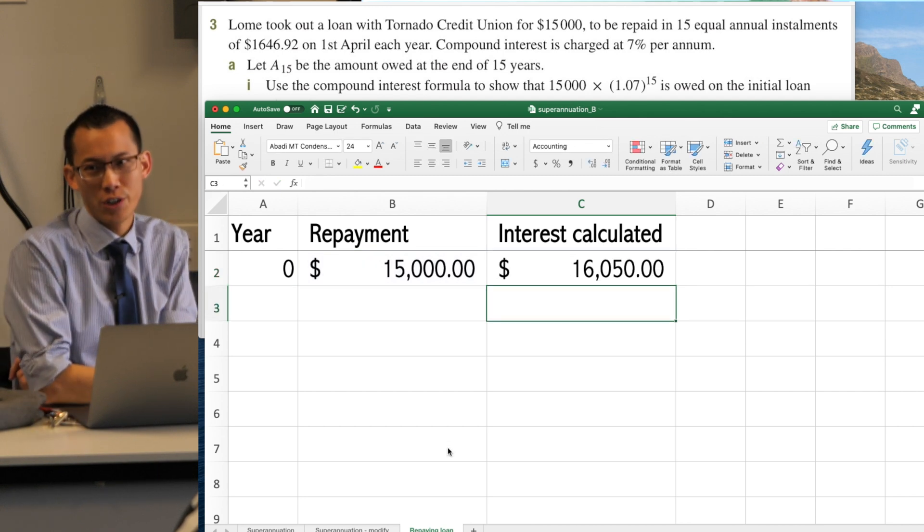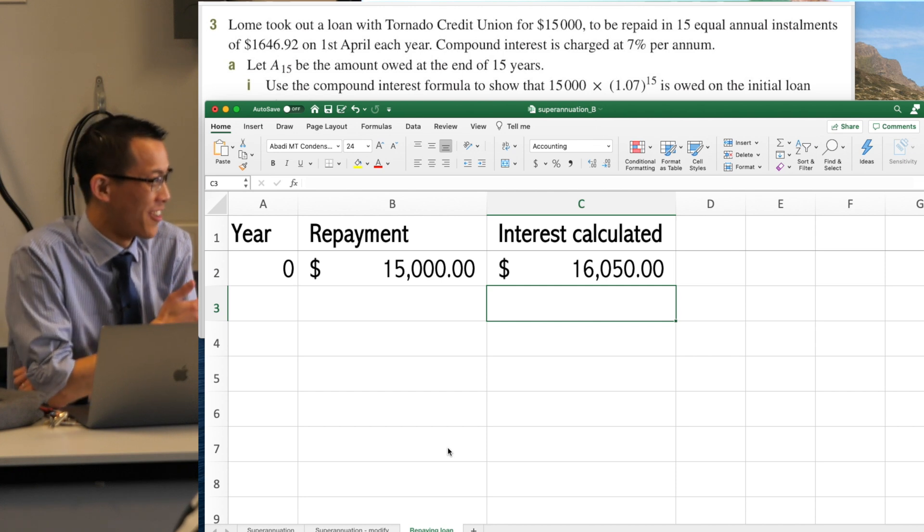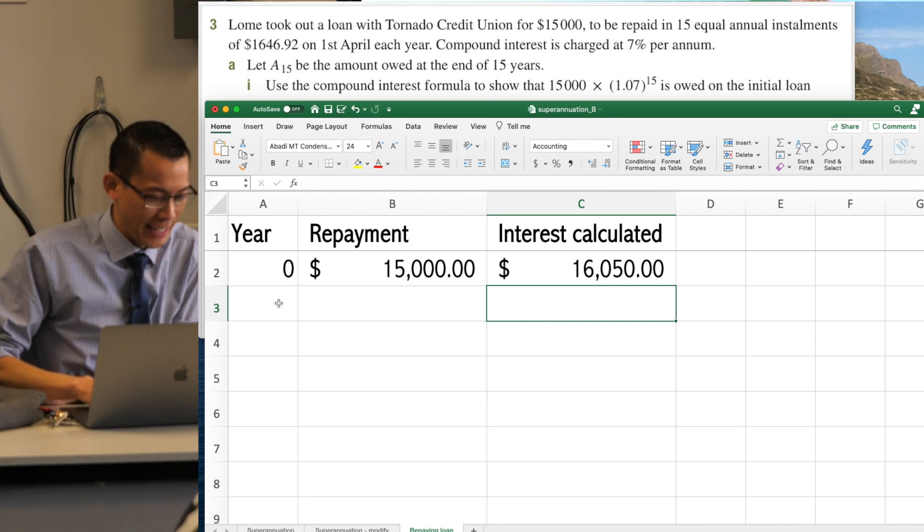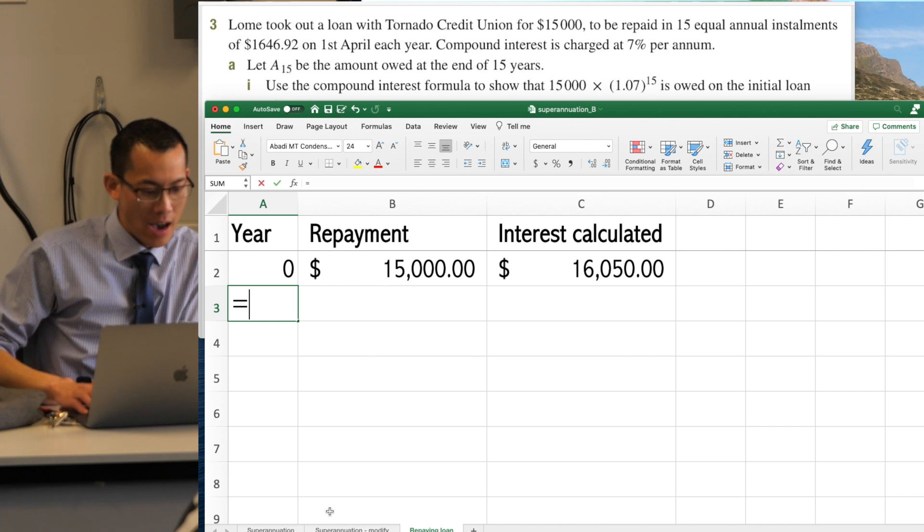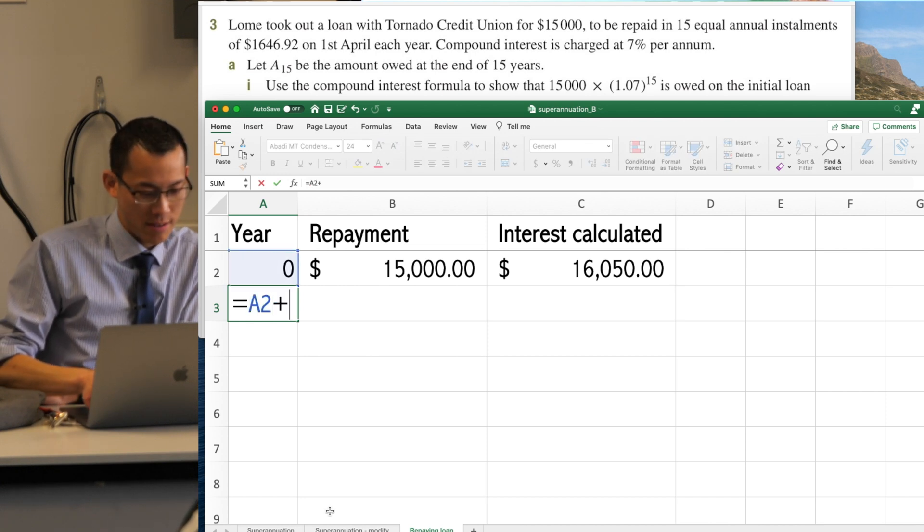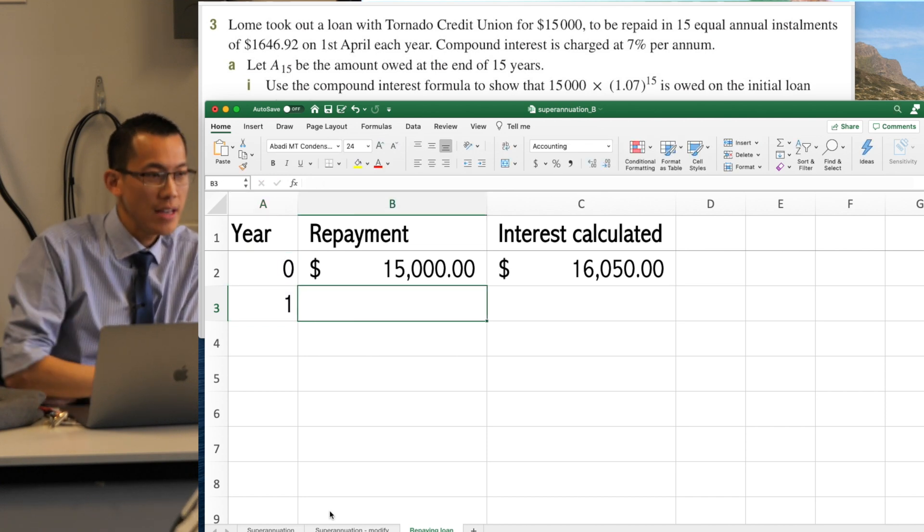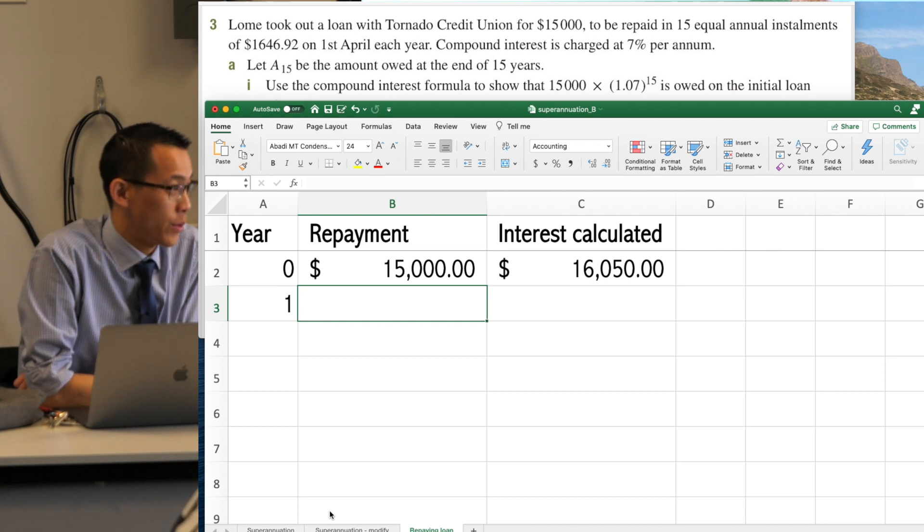So we hit enter. You're like, this is not looking good. I haven't done anything. This thing's already going up, okay? But thankfully, I'm going to go to year 1. I'm going to take the previous year and add 1.